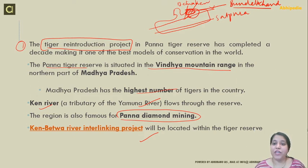There are issues with regards to the sustainability of the tiger reserve, as the Ken-Betwa interlinking project passes through the tiger reserve and could harm the tiger population.